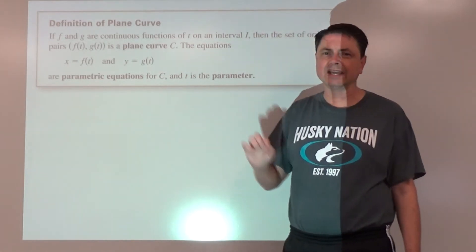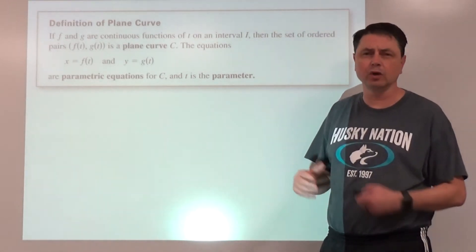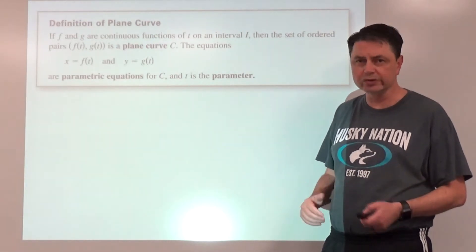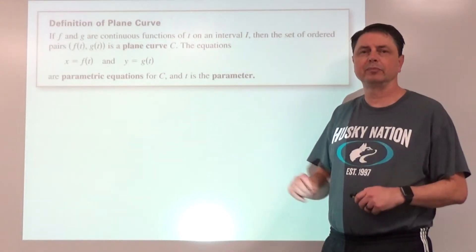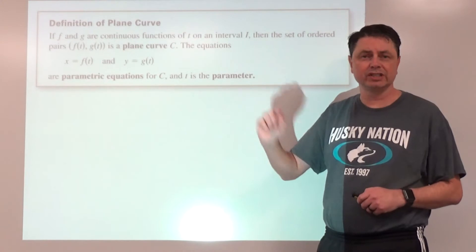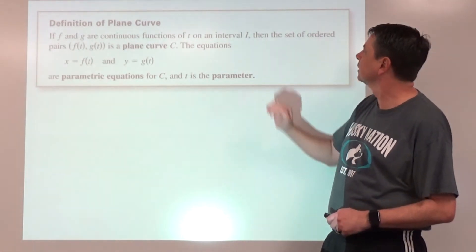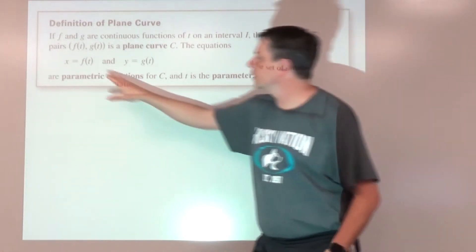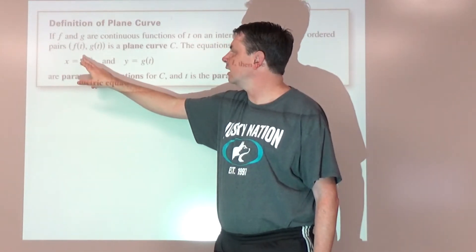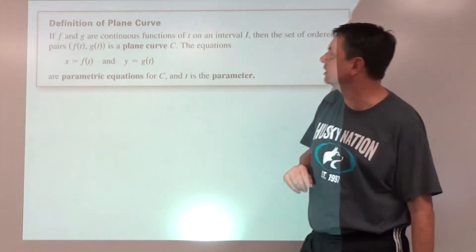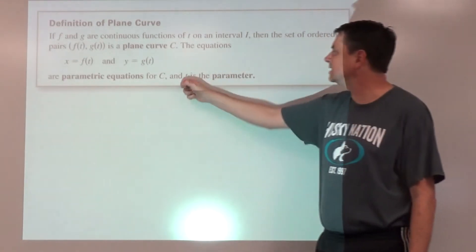Continuous means if you were drawing that function you could trace it without lifting your pencil — there are no breaks, no holes, no vertical asymptotes, and no jumps like in a piecewise function. Instead of ordered pairs, x is defined to be f(t) and y is defined to be g(t), where t is the parameter and I is the interval.